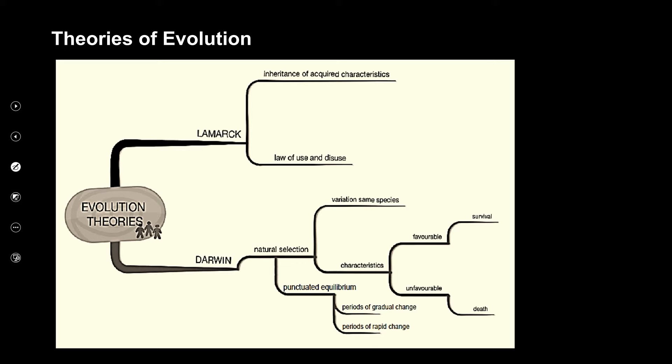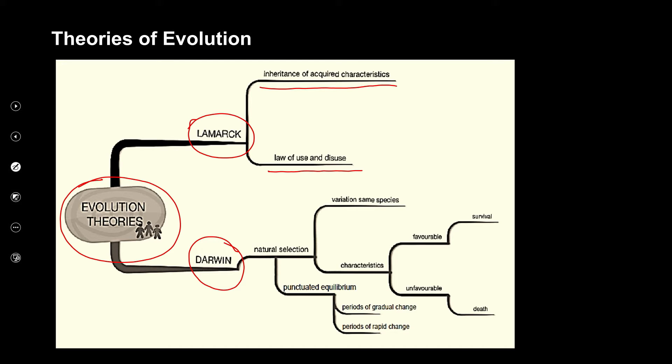This is what we call a mind map — a very useful study tool for setting out information. Our main concept is the theories of evolution, and the two main theorists are Darwin and Lamarck. We're going to look specifically at Lamarck's two laws: the law of use and disuse, and inheritance of acquired characteristics. We'll look at Darwin's natural selection and punctuated equilibrium later.